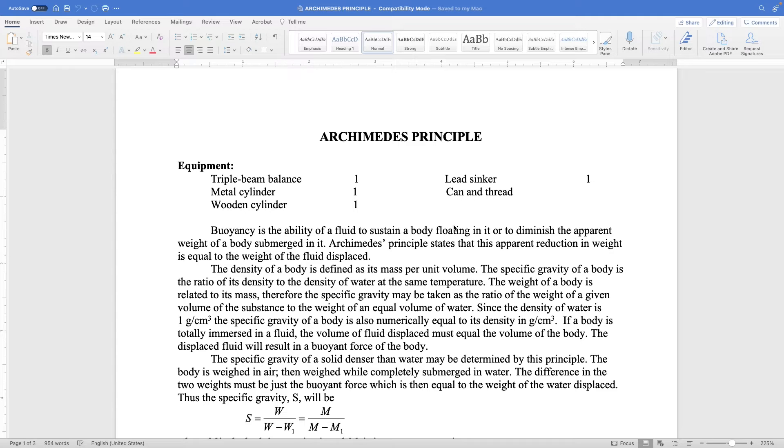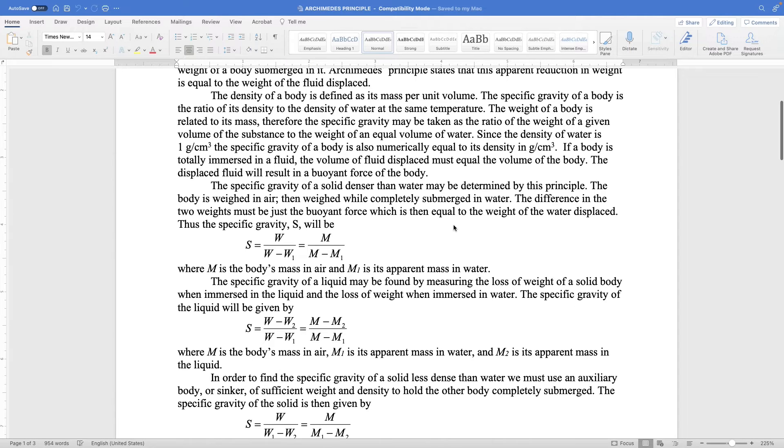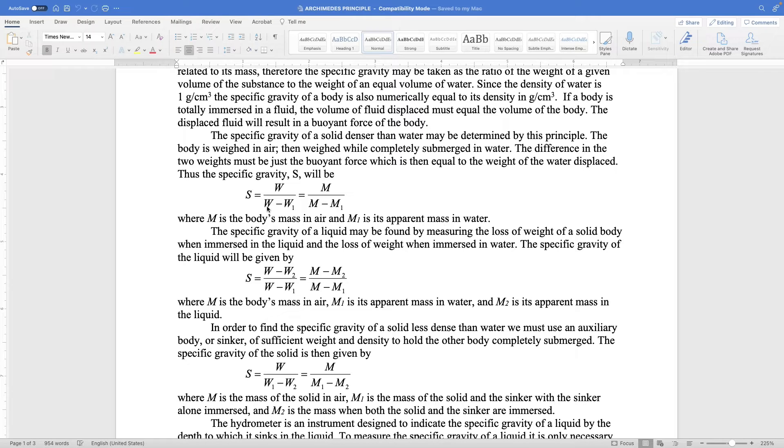I will show you the lab document and explain how the calculations are done. Thank you. Lab document on Archimedes principle. You can see the formula given here. So the first one is for the specific gravity of aluminum. Look at the second part: m by m minus m1. Here m is the mass of aluminum in air and m1 is its apparent mass in water. Apparent means what it appears to be.